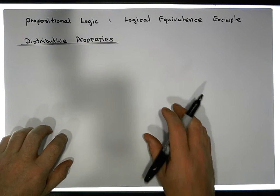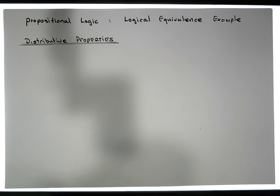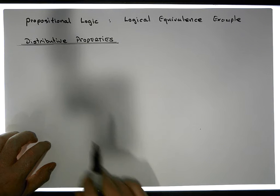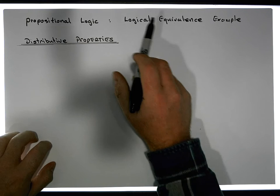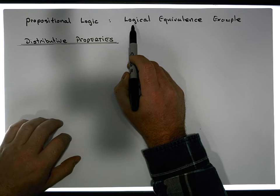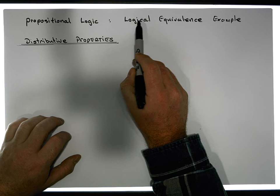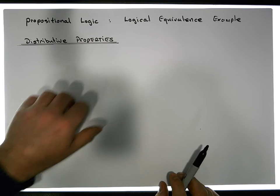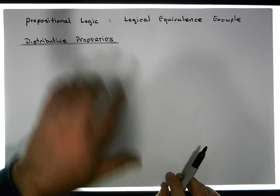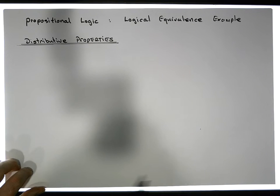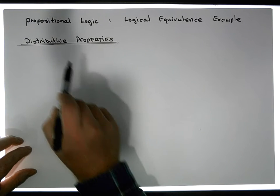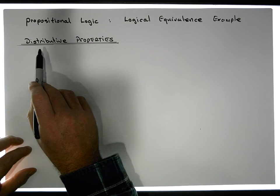Hi guys, this is Jonathan Lambert with the Mathematics Development and Support Service at the National College of Ireland. This is another video in our series dealing with propositional logic, and more importantly, in this particular example we're going to be looking at how to show logical equivalence. We're going to concentrate on what's known as the distributive law.